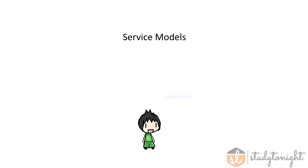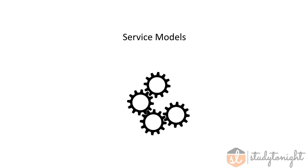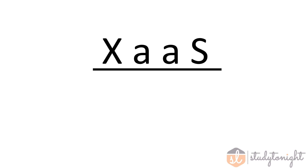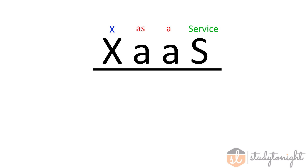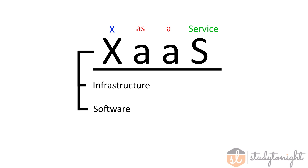Now we head into service models, which are ever so slightly more complicated than the deployment models. The service model of a cloud basically tells the cloud what its job is and what it's supposed to do. This job is defined by what we call the XaaS structure — it's short for X as a service, or something as a service. That something is one of three things: infrastructure, software, or platform.